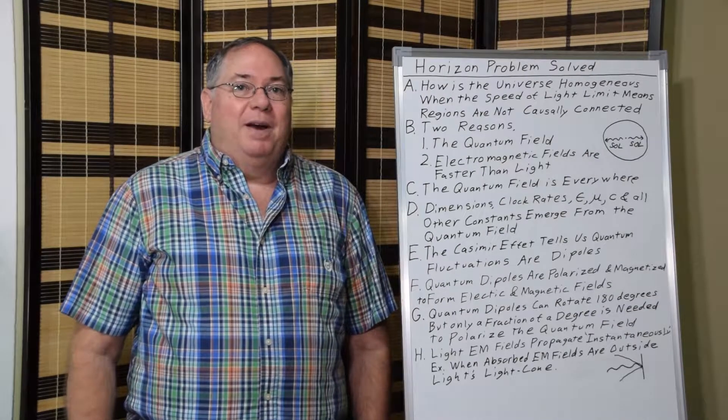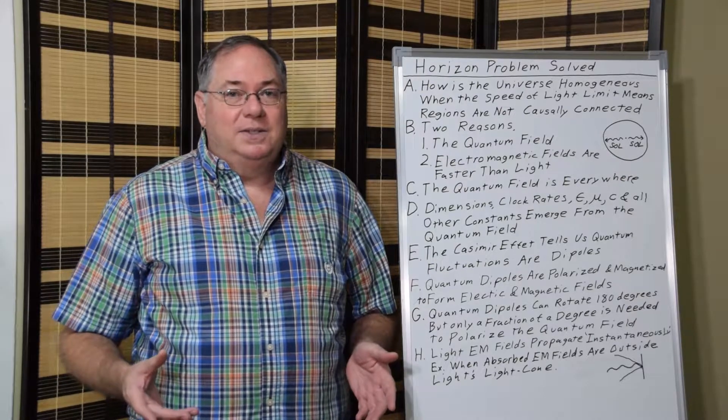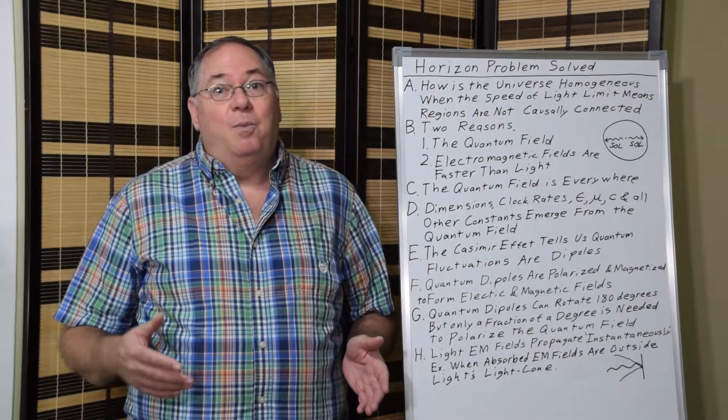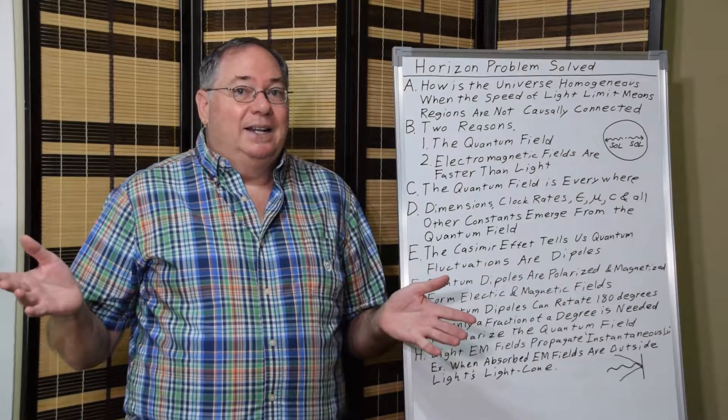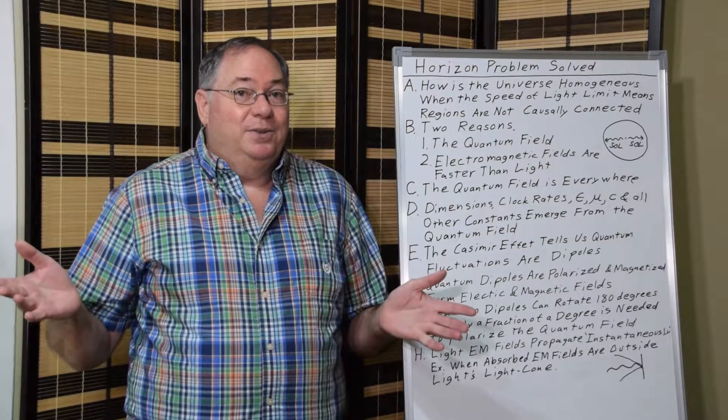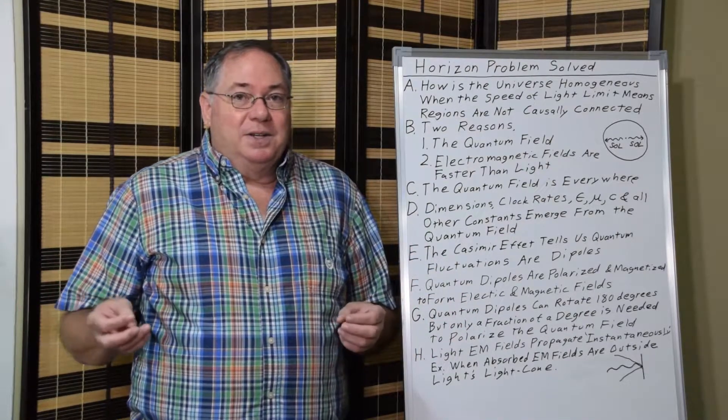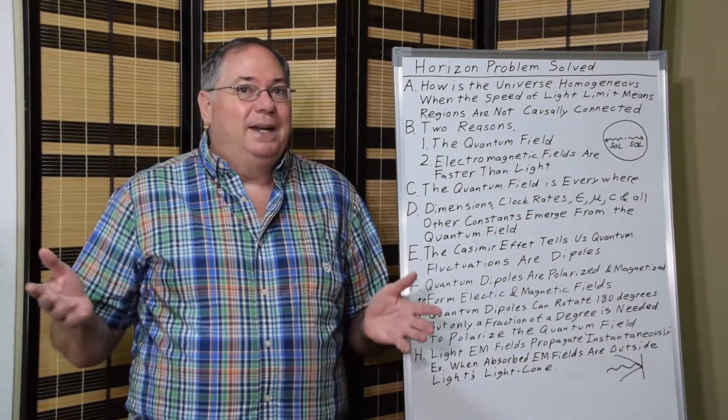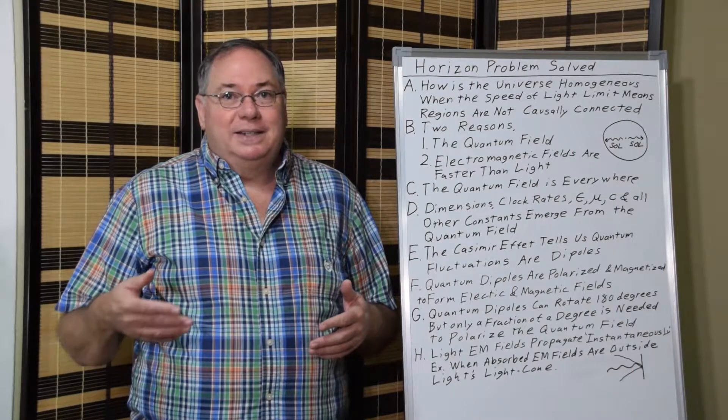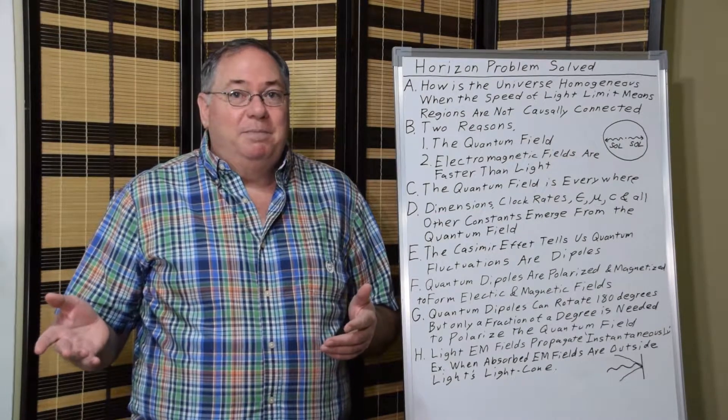If you've studied the Big Bang Model, you may be aware among its many failings, one is that it does not explain how one side of the universe is homogeneous and nearly identical to the other side of the universe. And this includes both all the physical constants, dimension, space, speed of light limit, and also the cosmic microwave background being the same.